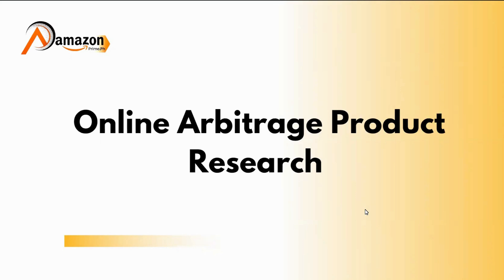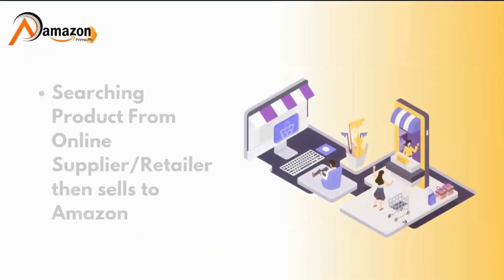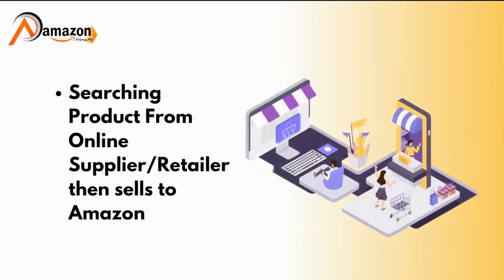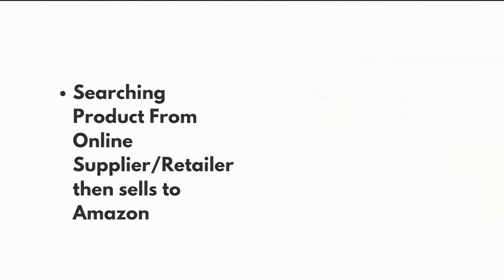Let's recap what online arbitrage is. Online arbitrage is when we find products from online suppliers or retailers and then sell them on Amazon. We search online for deals or discounted products that are pre-listed on Amazon, and then we sell them there. We have to make sure the product is pre-listed on Amazon, because if it's not listed, we can't sell it.